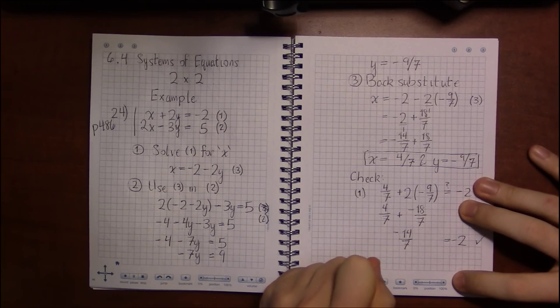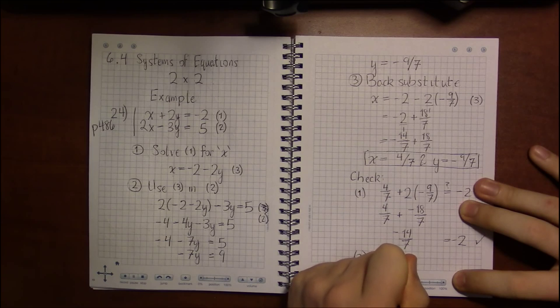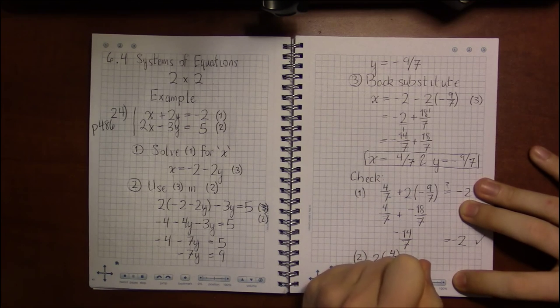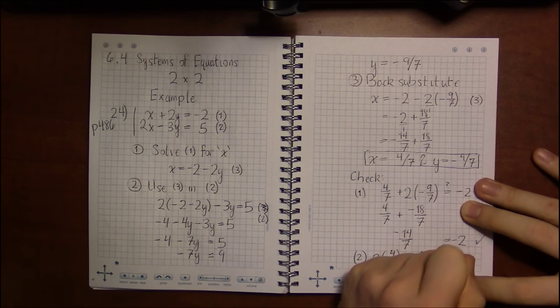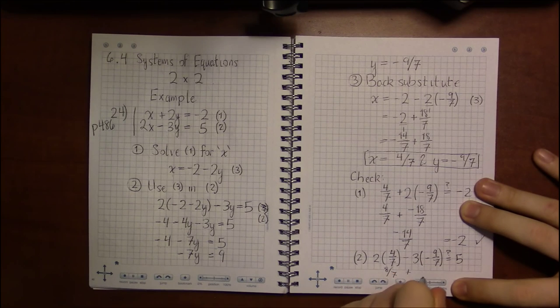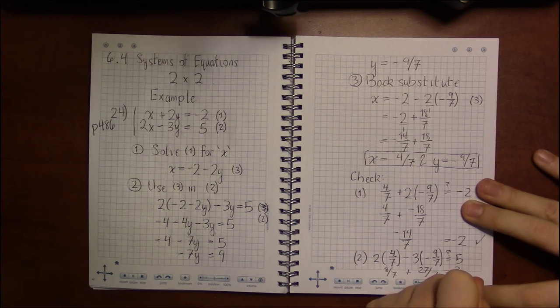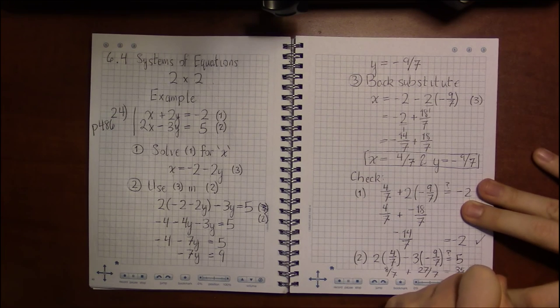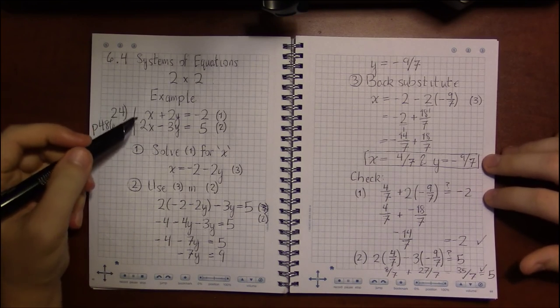And you can do the same kind of check in equation 2 to see if 2 times 4 sevenths minus 3 times minus 9 sevenths is indeed equal to 5. And here we have 8 sevenths plus 27 sevenths. That is 35 sevenths, and that is exactly 5. So this is indeed the correct solution.